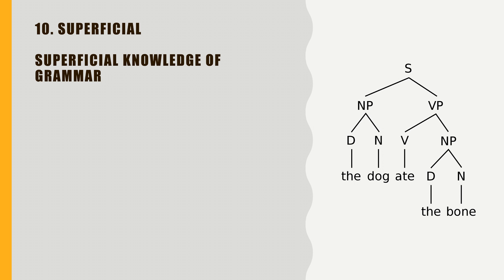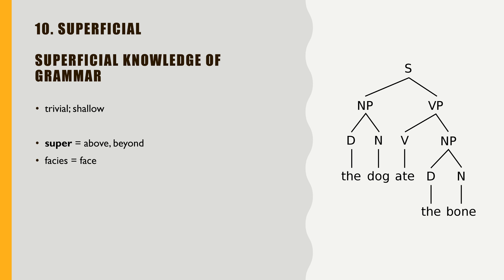Superficial — superficial knowledge of grammar. This means trivial or shallow. Trivial means not very important, and shallow means not deep or profound — just on the surface. That's what superficial means: on the surface, on the outside. 'Super' is the prefix meaning above or beyond, and 'faces' relates to face. When you have superficial knowledge of grammar, you know basic things like subject, verb, noun, and pronoun, but not any deep structural things related to grammar.